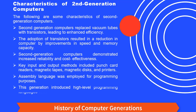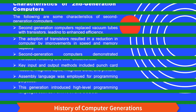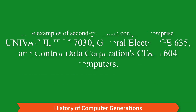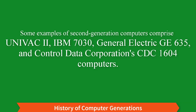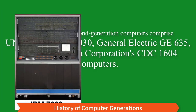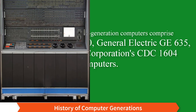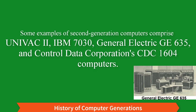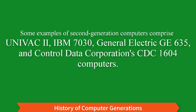This generation introduced high-level programming languages such as FORTRAN and COBOL. Some examples of second generation computers include UNIVAC-II, IBM 7030, General Electric GE 635, and Control Data Corporation's CDC-1604.